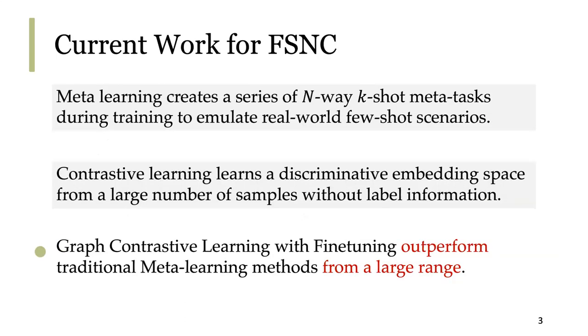Two approaches to address this problem are meta-learning and graph contrastive learning. Meta-learning creates a series of n-way k-shot tasks to mimic real-world few-shot scenarios, while contrastive learning creates an embedding space that distinguishes between similar and dissimilar data points, and then uses the embedding to train a classifier for few-shot tasks.